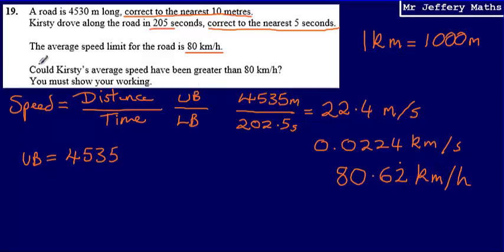Now the question I'm being asked is could Kirsty's average speed have been greater than 80 kilometres per hour. So our final answer is yes, and our reason is because she could have been going 80.62 recurring kilometres per hour.